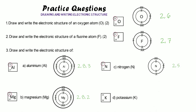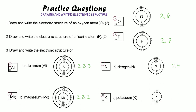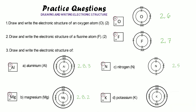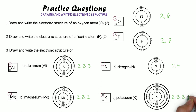Finally, potassium — the biggest one we'll do today. It has 19 electrons: two in the centre, then eight in the second shell makes ten, then another eight in the third shell makes 18, and one left for the final shell. That makes sense because potassium is in group one, and we write that as 2,8,8,1. The highest you'll be expected to go is calcium, which has just one more electron than potassium.